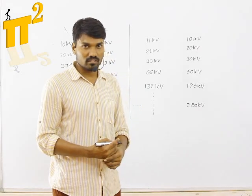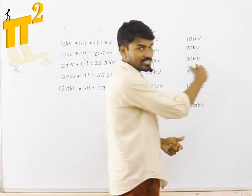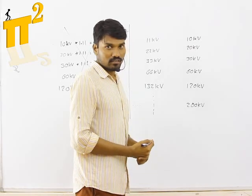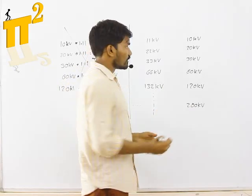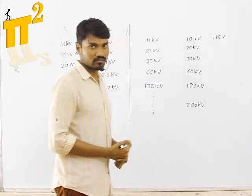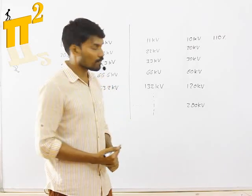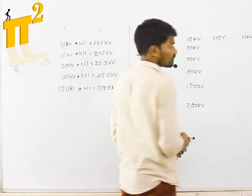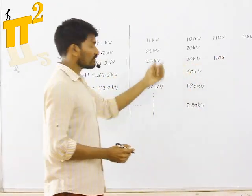But they know that in the transmission process there is a voltage drop, because of transmission line resistance. So they transmit 10 percent extra. They intend to deliver 10 kV at the receiving end, but at the sending end they transmit 110 percent of 10 kV — that is 11 kV. Likewise, 110 percent of 30 kV is 33 kV.